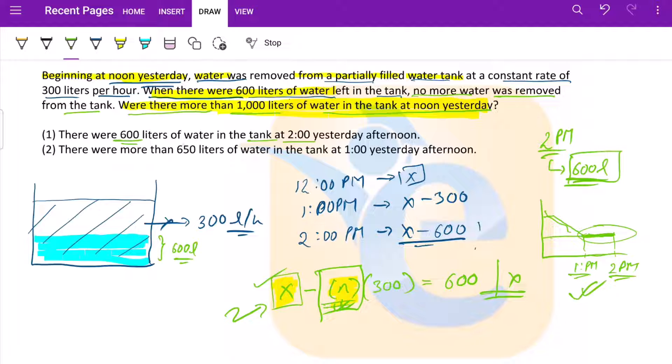If you would understand this concept, it does not mean that at 2 it stopped at 600. What this sentence is trying to say is that at 2 PM it was 600, but at what time did it reach 600? This exact time we do not know. So this statement is not sufficient to answer. We can eliminate option A and D.